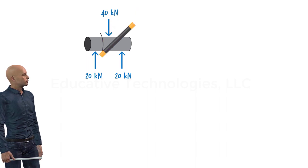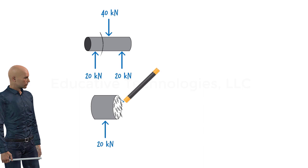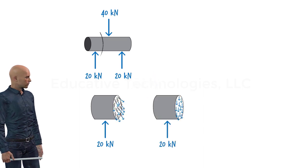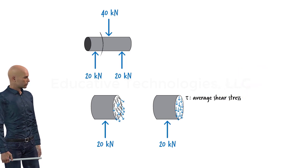If we examine a typical cross section of the bolt closely, we can see tangential forces on the surface of the cross section. Denoted by symbol tau (τ), we refer to these forces as the average shear stress.